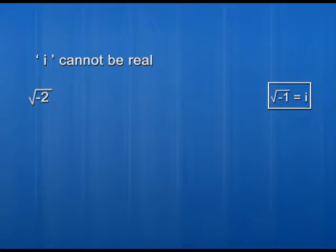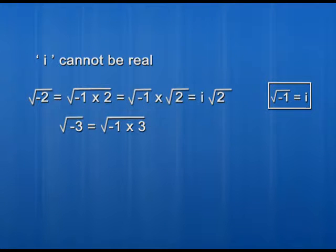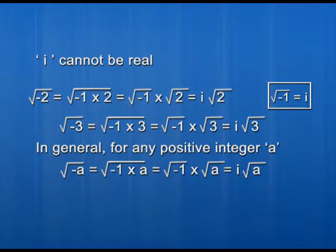Now, since i is the value of square root of minus 1, we can think about what the value of square root of minus 2 or square root of minus 3 would be. Square root of minus 2 can be written as square root of minus 1 times 2, which equals square root of minus 1 times square root of 2, giving us i times square root of 2. Similarly, square root of minus 3 equals i times square root of 3. In general, for any positive integer a, square root of minus a equals i times square root of a.